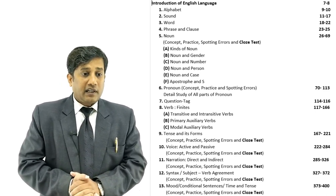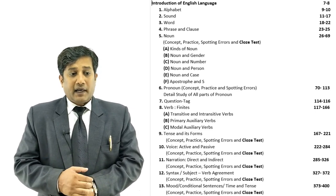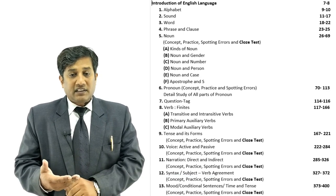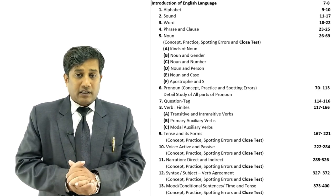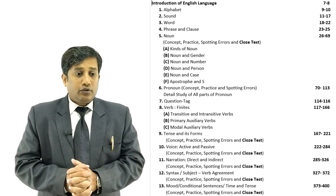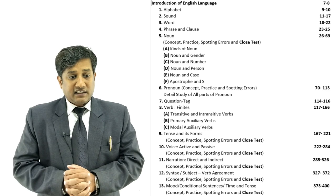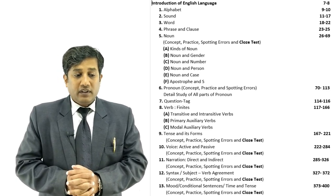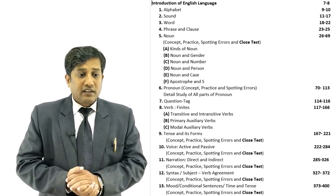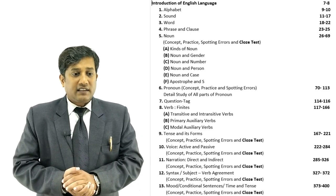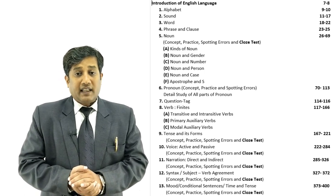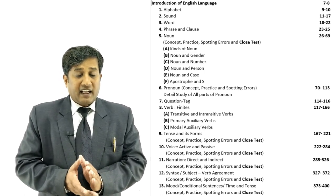The next topic is Noun. Inside noun, all its parts are covered: kinds of noun, noun and gender, noun and number, noun and person, noun and case, apostrophe and dash. A cloze test based on noun is also provided for practice, along with spotting errors. The next topic is Pronoun — all formats and parts of pronoun are covered, plus practice and spotting errors. Then comes Question Tag, explaining how question tags are formed and all possible types.